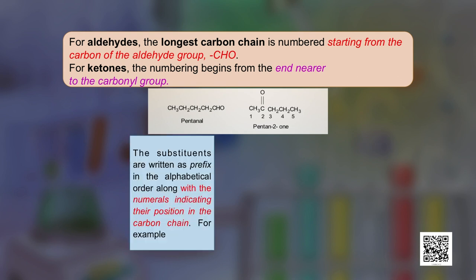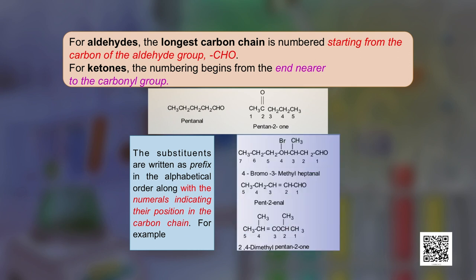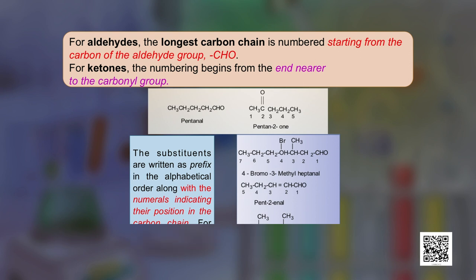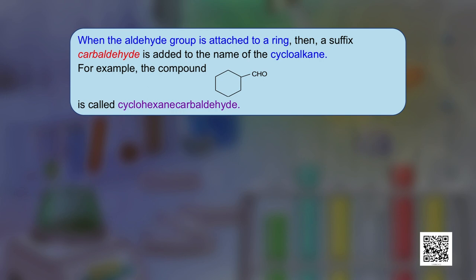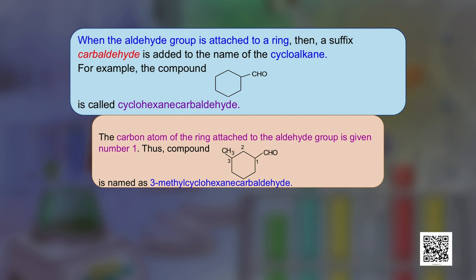The substituents are written as prefixes in alphabetical order, along with numerals indicating their position in the carbon chain. When the aldehyde group is attached to a ring, the suffix '-carbaldehyde' is added to the name of the cycloalkane. For example, the compound shown is called cyclohexanecarbaldehyde. The carbon atom of the ring attached to the aldehyde group is given the number 1, so the compound shown is named 3-methylcyclohexanecarbaldehyde.